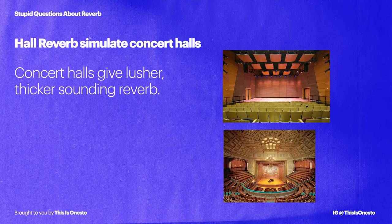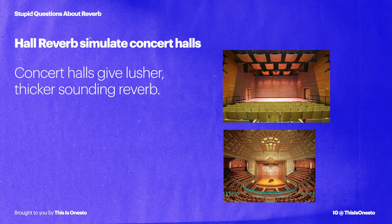Moving on to hall reverbs. Hall reverbs are similar to rooms in that they're trying to simulate a real space, but the difference is that hall is trying to sound like concert halls — which are typically big spaces with tall ceilings and highly reflective surfaces. That's why orchestral instruments or ballad vocals really like to be placed in halls.